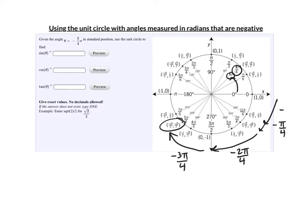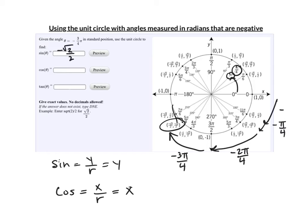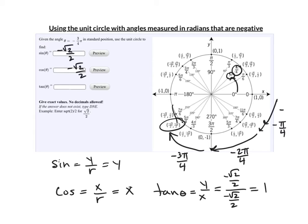There's my x and my y. Now, I know that sine is y over r. And remember, r is 1 in the unit circle, so all we're looking at is just y. The y value is negative root 2 over 2. The cosine is x over r, and since r is 1, it's just x. The x is also negative root 2 over 2. The tangent of theta is y over x — negative root 2 over 2 divided by negative root 2 over 2. Anything divided by itself is 1, and two negatives make a positive. The tangent is 1.